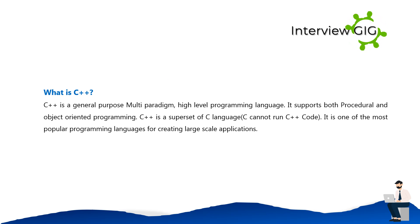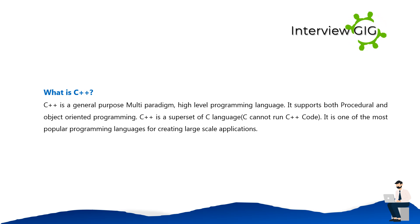What is C++? C++ is a general-purpose, multi-paradigm, high-level programming language. It supports both procedural and object-oriented programming. C++ is a superset of C language; C cannot run C++ code. It is one of the most popular programming languages for creating large-scale applications.